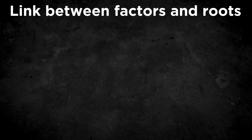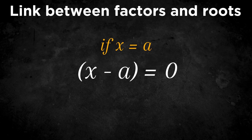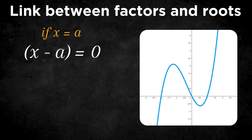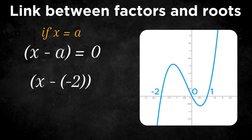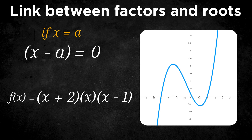Factors and roots are connected. Every factor of the form x minus a produces a zero when x equals a. On a graph, these are the exact points where the curve touches or crosses the x-axis, because the function equals zero at these points. In this case, the graph has three different roots: minus 2, 0, and 1. So the factors would be x minus (minus 2), so x plus 2; x minus 0, so x; and x minus 1. This would be the factored form for this unique function.